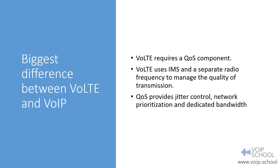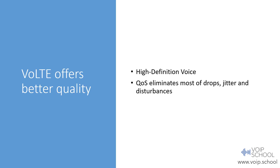The biggest difference between Voice over LTE and Voice over IP is that Voice over LTE requires a QoS component. Voice over LTE uses IMS and a separate radio frequency to manage transmission quality. QoS provides jitter control, network prioritization, and dedicated bandwidth — tools that increase voice quality. The result is that Voice over LTE offers better quality than a normal mobile call: you get high-definition voice, and QoS eliminates most drops, jitter, and disturbances so there is no clicking, distortion, or metallic voice.